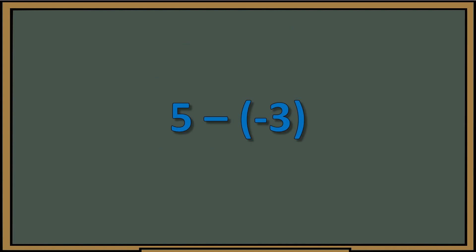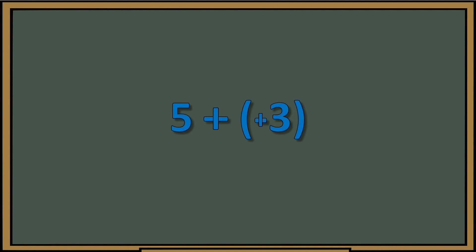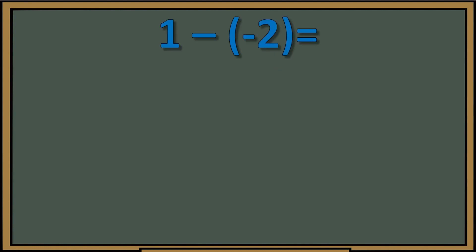There's a special rule: whenever we try to subtract a negative number, that actually means we're adding. Whenever we have a minus and a negative next to each other, we need to add. I use the chop-chop strategy: chop the minus and chop the negative — convert them both into positives. Some teachers call this the keep-change-change rule. I use chop-chop because I only apply it when a minus and a negative appear next to each other.